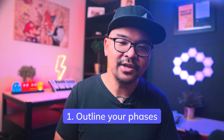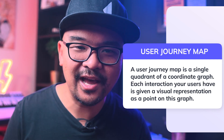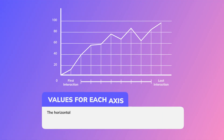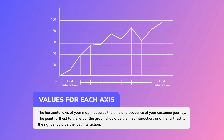First is to outline your phases. A user journey map is a single quadrant of a coordinate graph. Each interaction is given a visual representation as a point on this graph. Before you start logging these points, you need to define the values for each axis. The horizontal axis of your map measures the time and sequence of your customer journey map — the points furthest to the left should be the first interaction and the furthest to the right should be the last interaction.